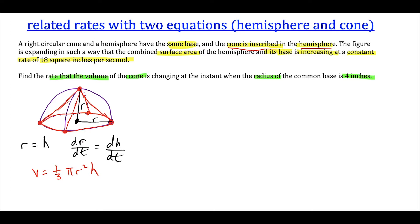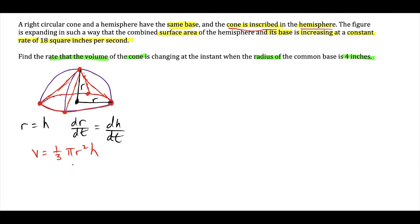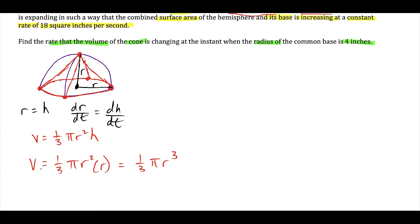Since r equals h, we can substitute r for h in the volume formula, giving us V = one-third π r³. Taking the derivative with respect to time, we get dV/dt equals one-third π times 3r² dr/dt, which simplifies to dV/dt = π r² dr/dt. This is the equation we'll use to find the rate of change of volume.